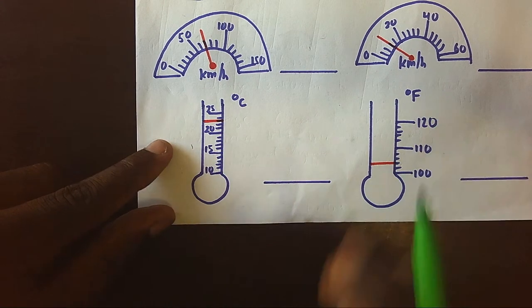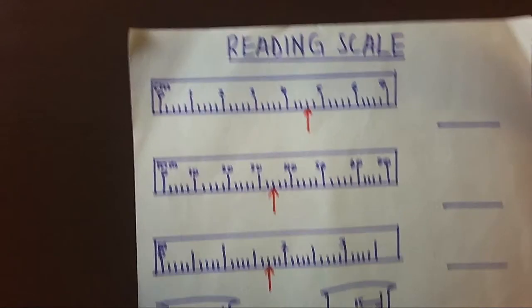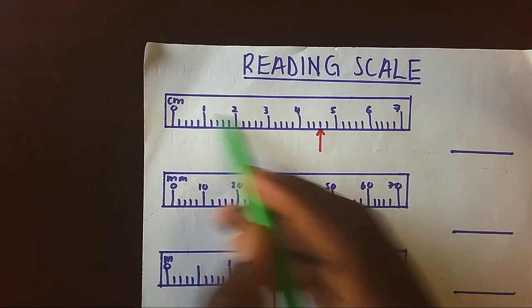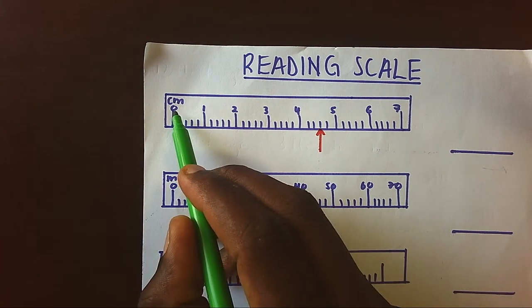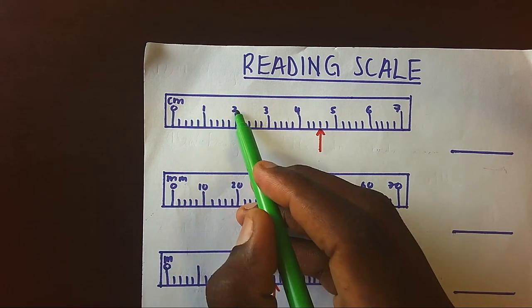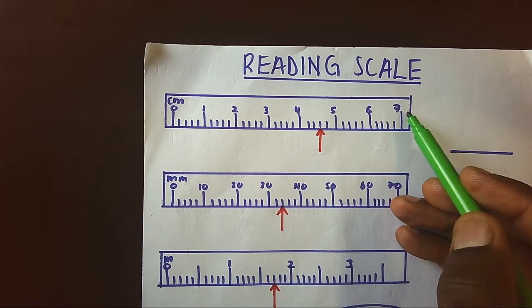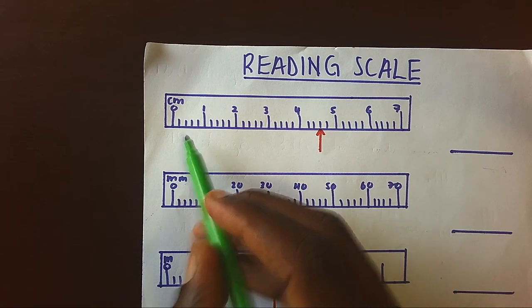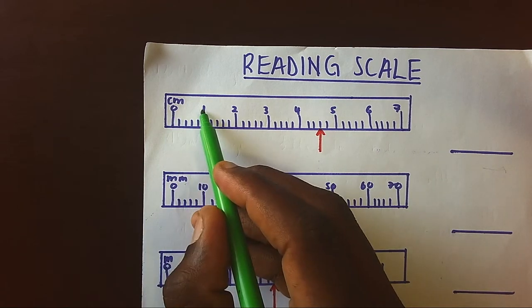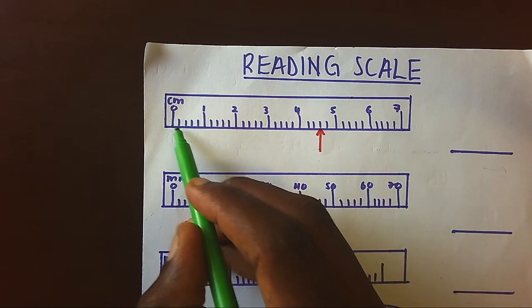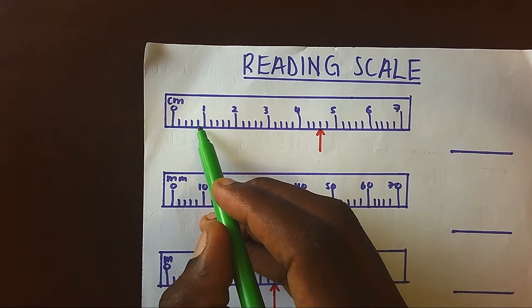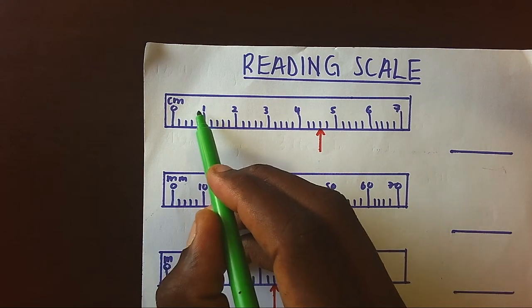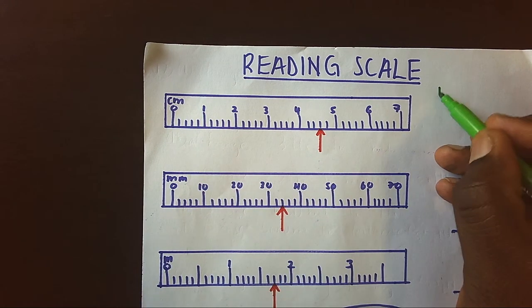Now how do we measure scale? One, we look at the main readings like our reading number one here is zero, one, two, three, four, five, six, seven. Then we look at the spaces between each value. From zero to one we have one, two, three, four, five spaces.